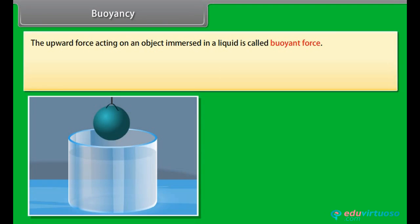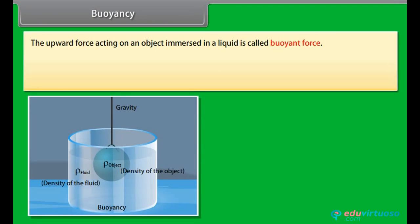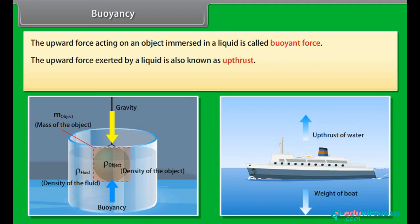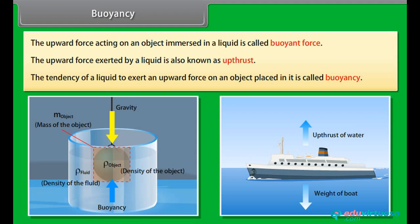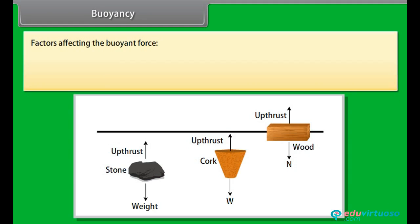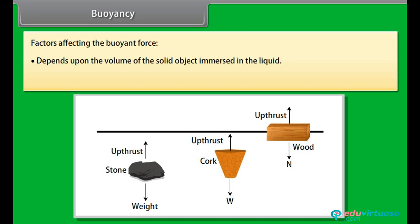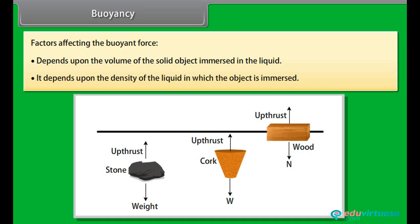The upward force acting on an object immersed in a liquid is called buoyant force. The upward force exerted by a liquid is also known as up thrust. The tendency of a liquid to exert an upward force on an object placed in it is called buoyancy. Factors affecting the buoyant force: it depends upon the volume of the solid object immersed in the liquid, and upon the density of the liquid in which the object is immersed.